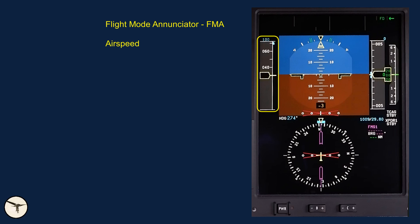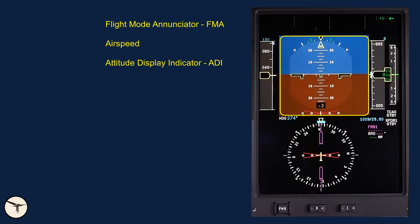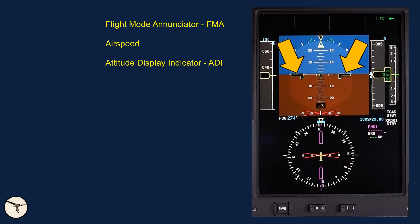The airspeed indicator shows speeds over 30 knots. The number on top of the indicator is the target speed. When the aircraft is powered up, the default value is 100. The attitude display indicator, ADI, is the most important instrument — it shows aircraft pitch and roll. The little black and yellow box represents the fuselage of the aircraft, and those L-shaped figures are the wings.